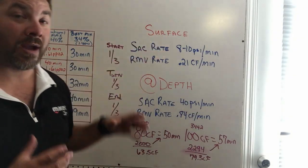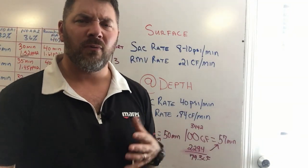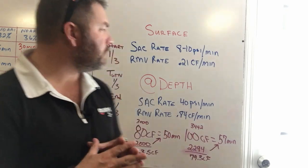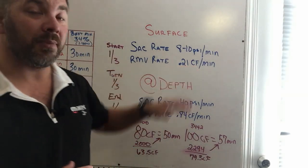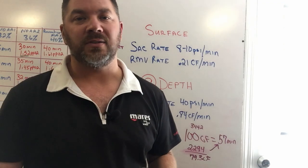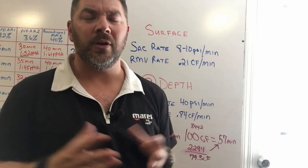My personal SAC rate is around 8 to 10 PSI a minute based off what cylinder I'm using or workload, and my RMV rate is simply 0.21 cubic feet a minute, so it's not even a quarter of a cubic foot.